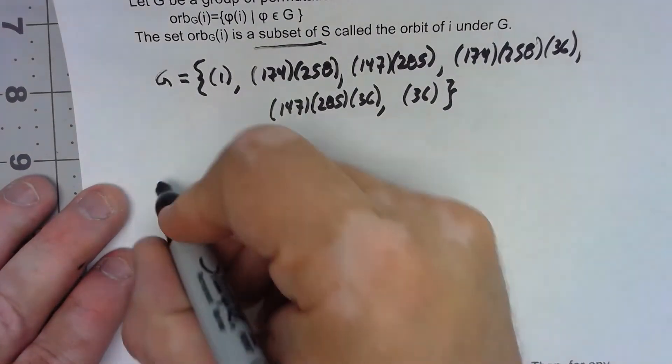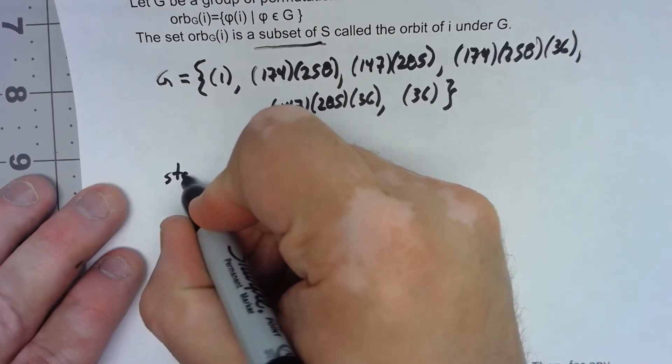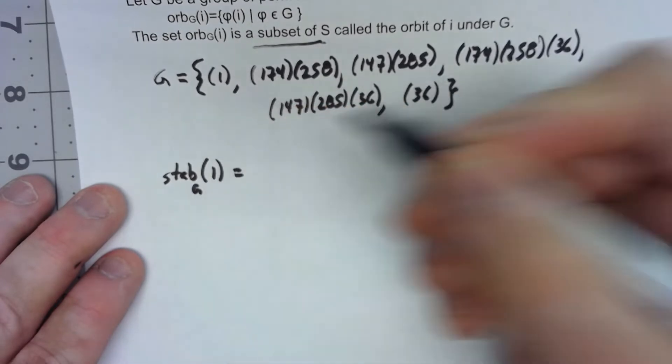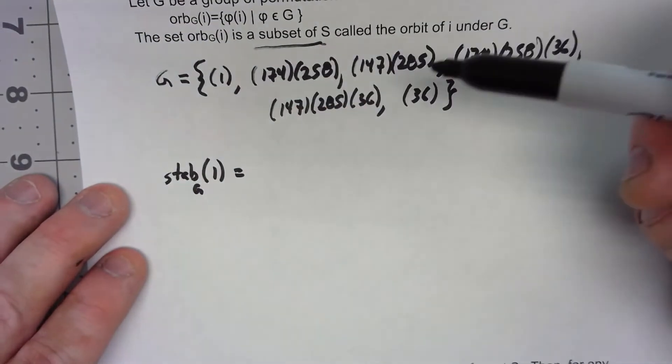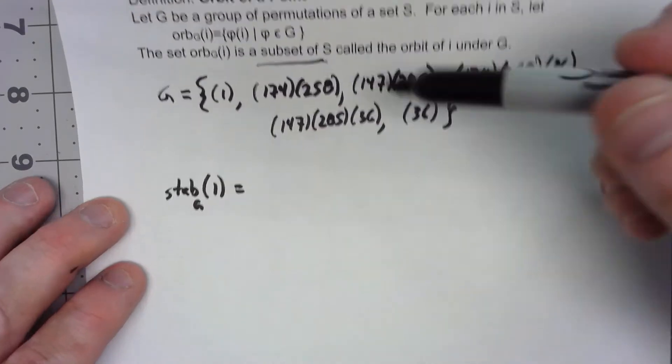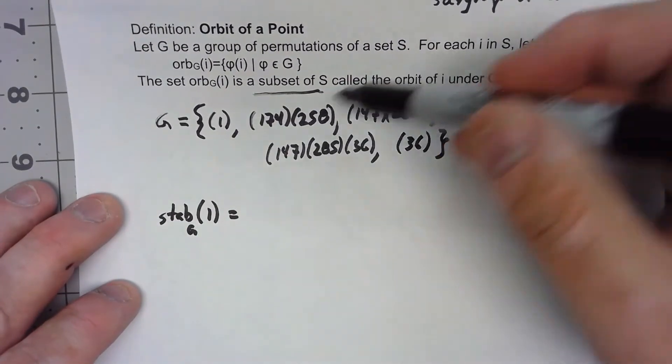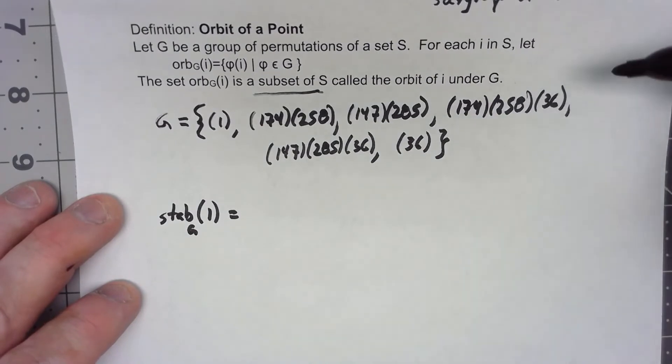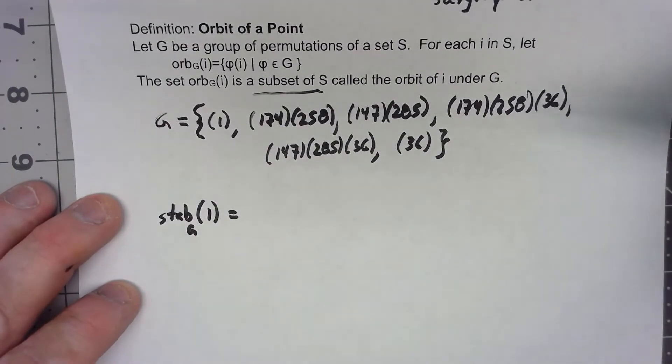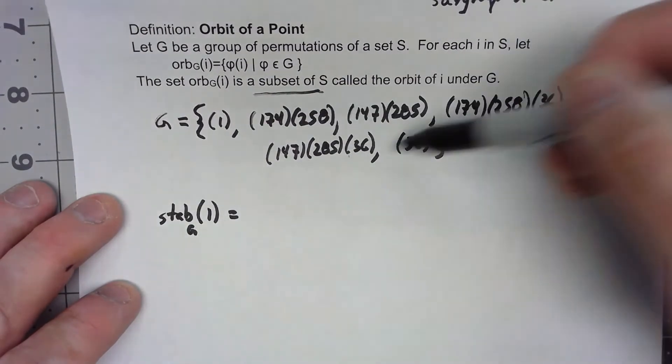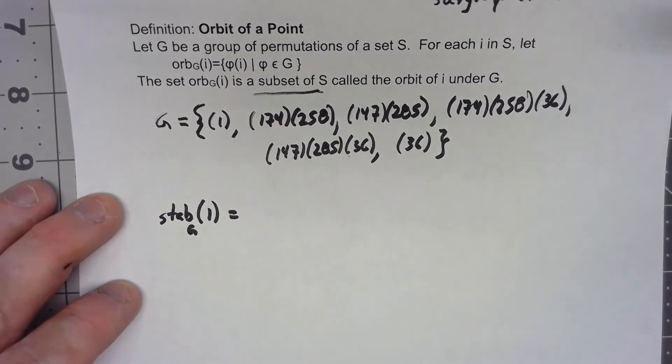So what is the stabilizer of one in that set? So we're trying to find out of these permutations, out of these group elements in G, which ones keep one fixed? Well, this one, this one, this one, and this one, all the middle four, all are affecting one.